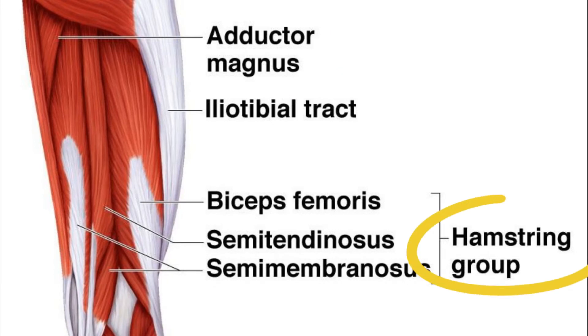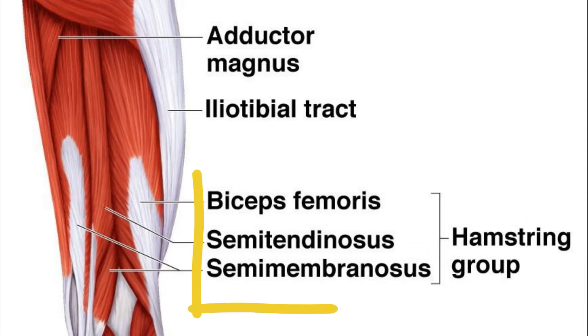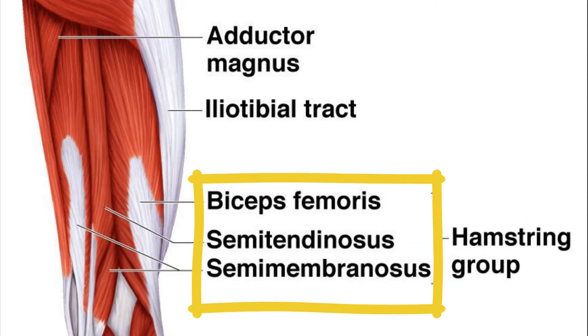Moving on to the muscles of the posterior thigh, you have the hamstring group which consists of three muscles: biceps femoris, semi-tendinosus, and semi-membranosus.